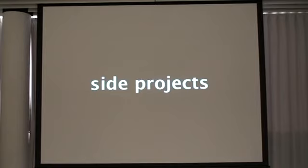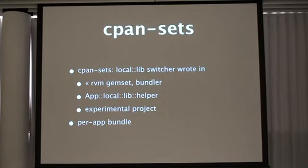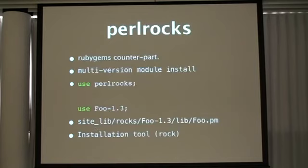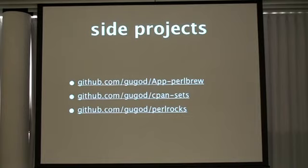I have two more related projects: one is called CPAN sets, which lets you switch between different site-libs. And another one just came out yesterday — I was trying to redo Ruby Gem in Perl, so you can uninstall CPAN modules, which is easy. Check it out — it's not finished yet and not even released, but it's cool. Thank you.